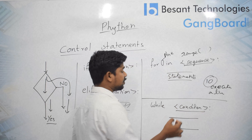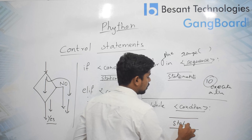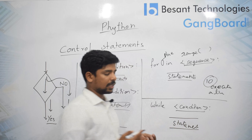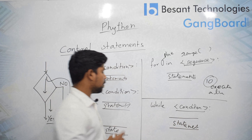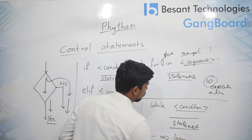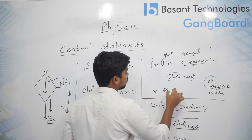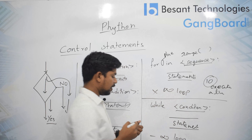Next comes the while loop. With while, we check a condition, and if the condition is satisfied we execute the statements; otherwise we don't. An infinite loop can be achieved with while loop, which cannot be achieved with a for loop. We use for loop when we know the range — how many times to execute. While can be used both for infinite loops and for a fixed number of iterations based on a condition.